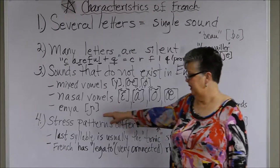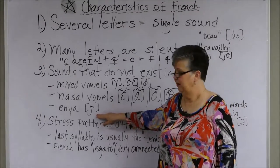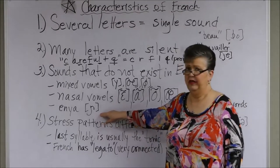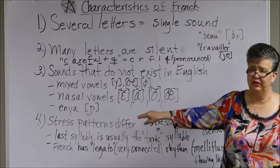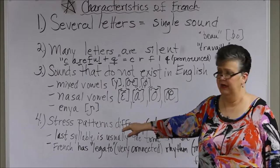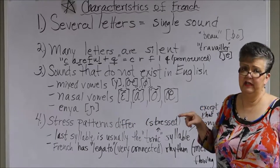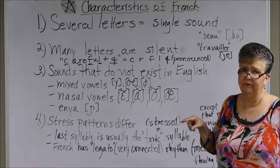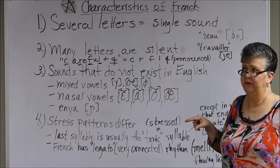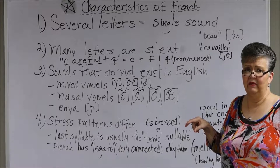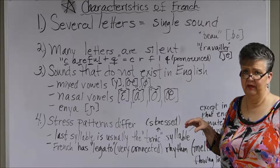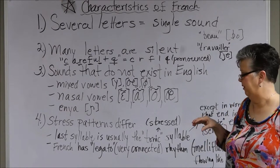Then the Enya sound — which, if you studied Italian, also exists there — has to do with the G-N spelling. The closest we can come to that sound in English is the word 'onion.'